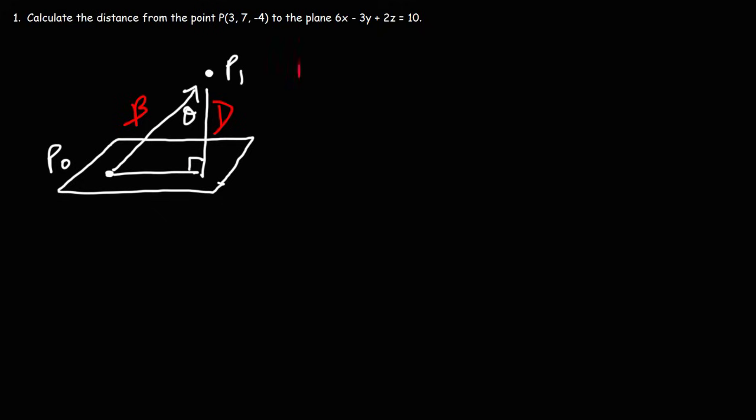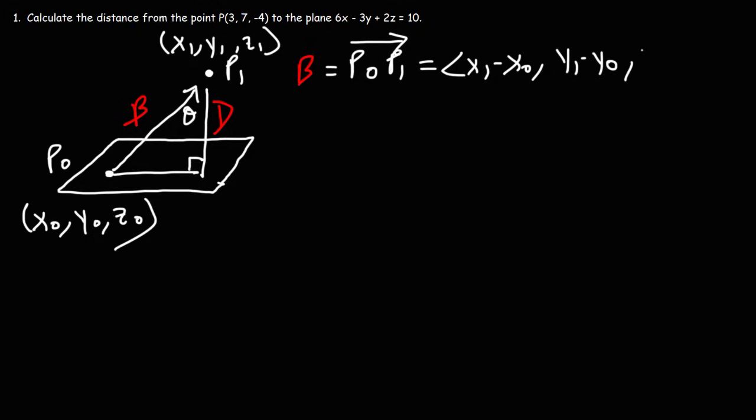Well, first, let's begin by defining vector B. B is basically P0 to P1, so it's the difference between those two points. P1 has the coordinates x1, y1, z1. P0 has the coordinates x0, y0, z0. So vector B is going to be x1 minus x0, y1 minus y0, z1 minus z0.